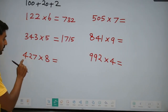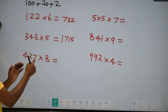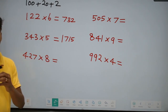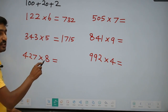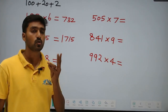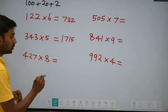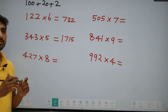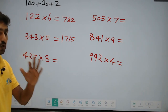The same: 427 into 8 — split into 400 plus 20 plus 7. 400 into 8 is 3200. Plus 20 into 8 is 160. 3200 plus 160 is 3360. Plus 7 into 8 is 56. 3360 plus 56 is 3416.